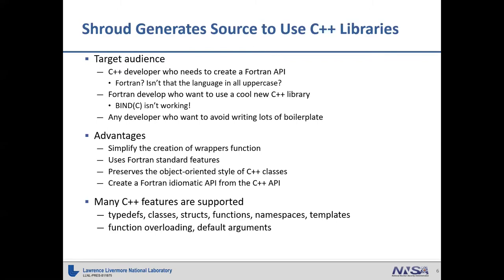Shroud simplifies the creation of wrappers — the user just creates an input file and Shroud creates the wrappers for you. It uses Fortran standards to implement all the wrappings — no do-it-yourself — which is very important because we expect these wrappers to compile for the next 20 years. It preserves the object-oriented style of C++ classes and creates a very idiomatic Fortran API. It can do conversion from blank-filled to null-terminated strings, so the person using the Fortran API doesn't really know they're calling C++ underneath.